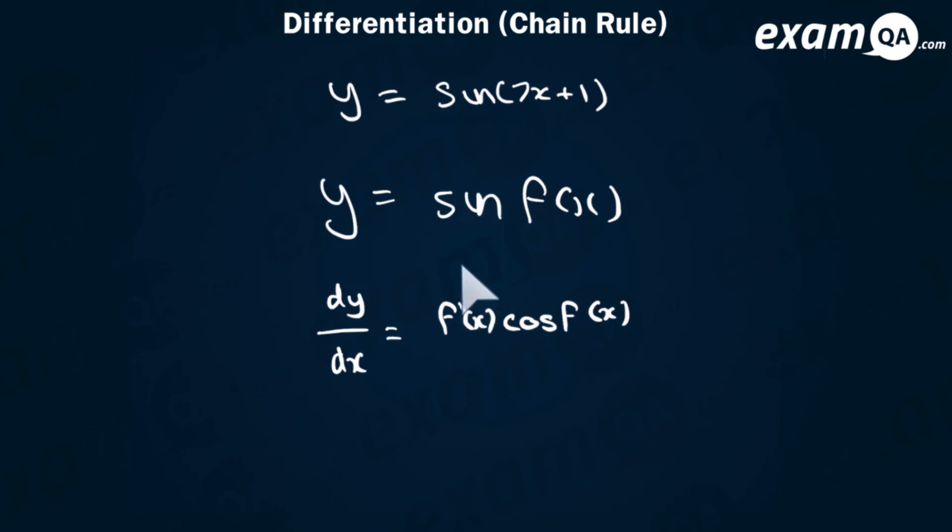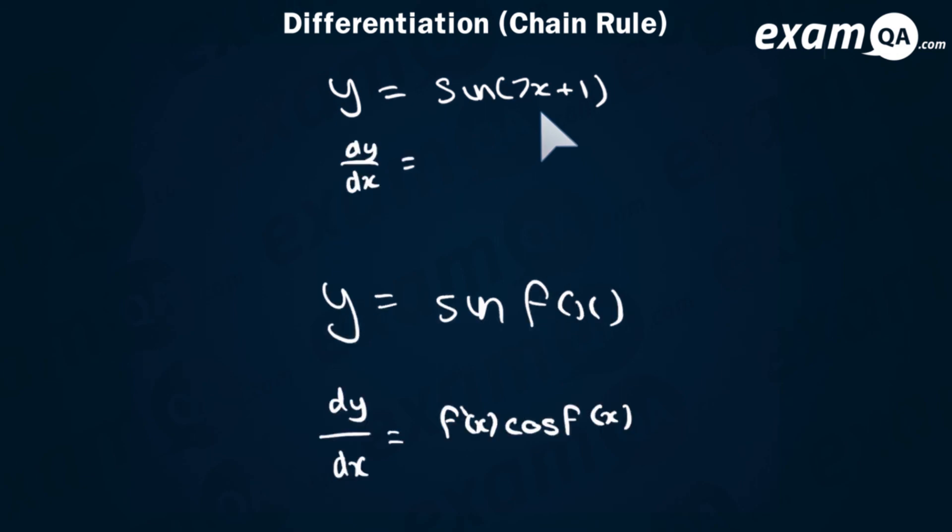So looking back at sine 7x plus 1, we know it goes to cos 7x plus 1. So this should go to cos of that function. Now we also multiply it by the differentiation of that function, that 7x plus 1. And the differentiation of 7x plus 1 is just 7. And that's how you expect to do it in one step. You don't show all the chain rule steps.